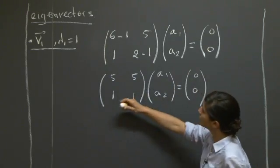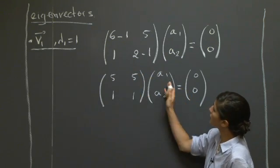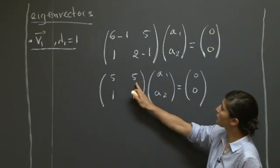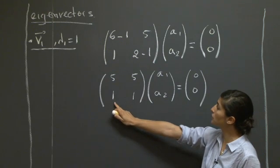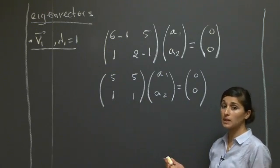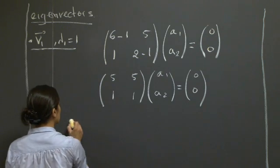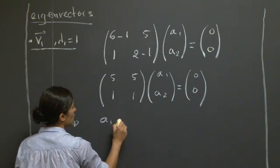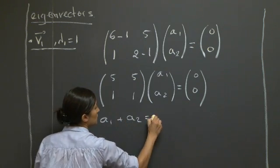So as you saw before, here basically we can read off the equation as being 5a1 plus 5a2 equals 0, and another one which is a1 plus a2 equals 0. They are the same equations. So really we just have a1 plus a2 equals 0.